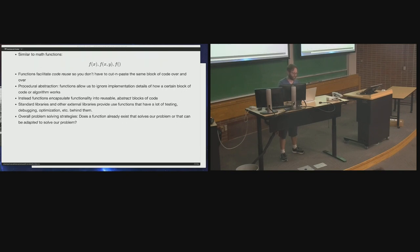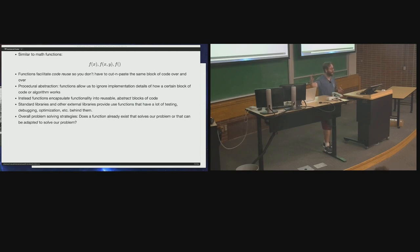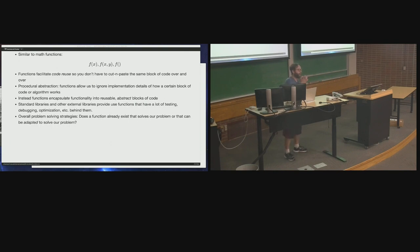So the overall problem-solving strategy is: does a function already exist that solves our problem or can be adapted to solve it? Hopefully that motivates you that functions are a good thing to have. Every program you've done up to this point has probably been one function — the main function — because you've been doing short programs. Once you get into programs that are more than 20 or 30 lines of code, especially thousands or millions of lines of code, putting it all into one function is definitely not the way to go. You want to split your code into smaller bits — naturally into functions — and then collect related functions into modules or libraries.